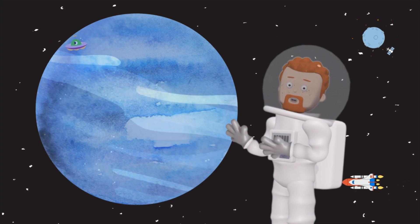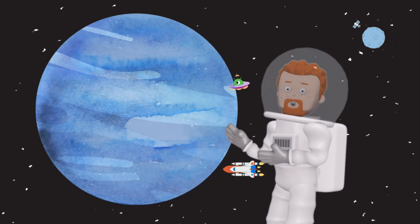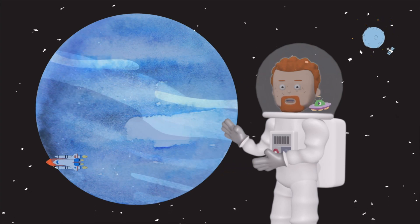Look at those swirling blue clouds. Neptune has the strongest winds in the solar system, blowing at over 1,000 miles per hour. That's faster than a speeding jet.